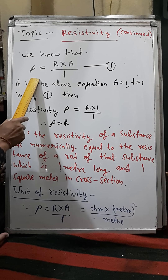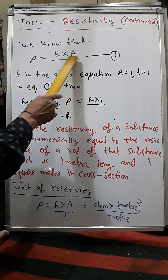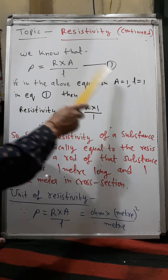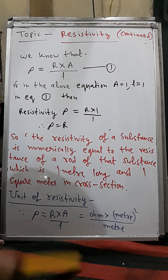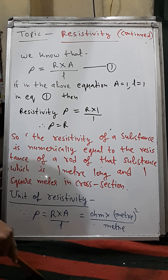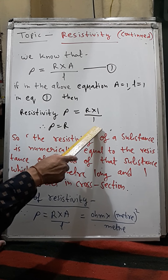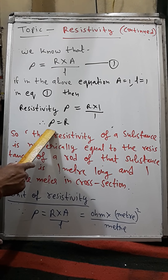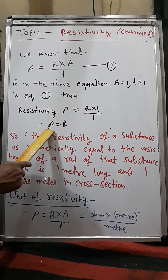Rho, which is called specific resistance or resistivity, is equal to R into A upon L — this is equation number one. Now if we put the value of area of cross-section A as one, and the length of the conductor as one, then rho is equal to R into one upon one, which means rho is equal to R.